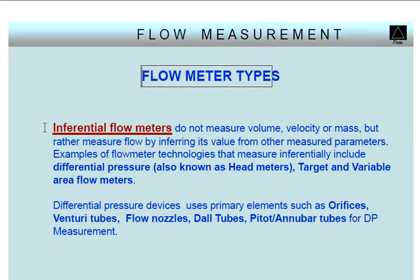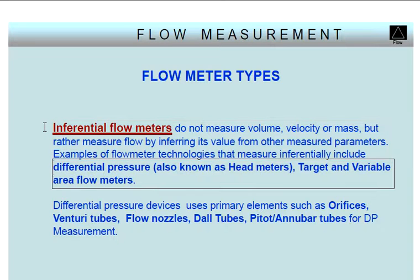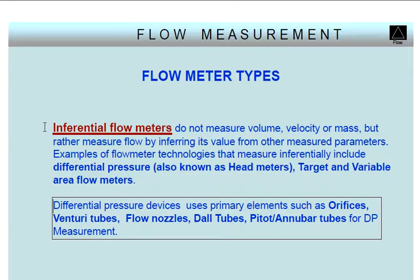Inferential type flow meters do not measure volume, velocity, or mass, but rather measure flow by inferring its value from other measured parameters. Examples of flow meter technologies that measure inferentially include differential pressure — also known as head meters — target, and variable area flow meters. Differential pressure devices use primary elements such as orifices, venturi tubes, flow nozzles, dall tubes, and pitot/annubar tubes for DP measurement.